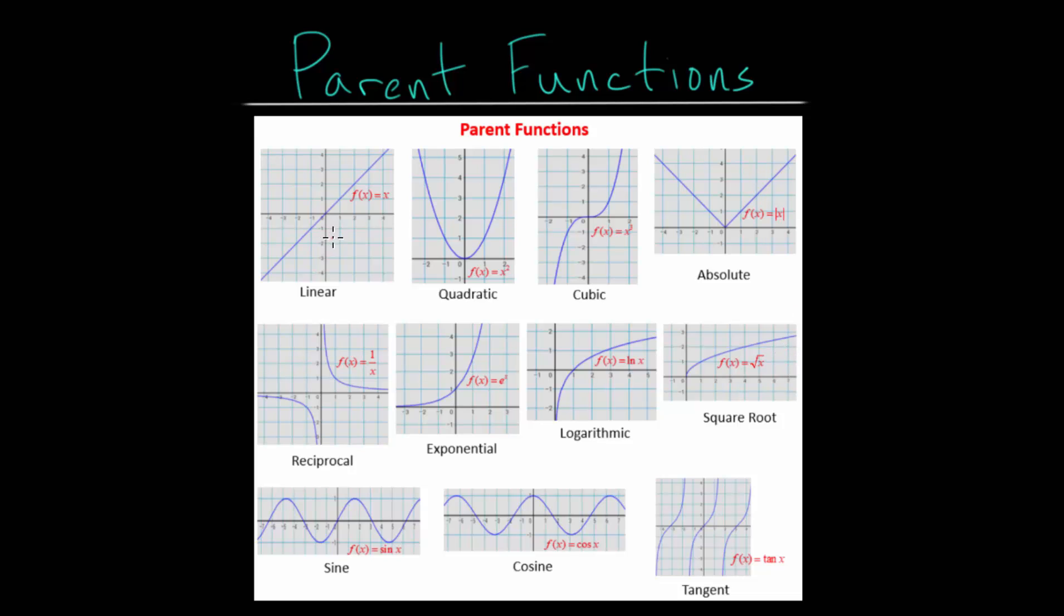We can see the basic polynomials. We have the linear, the quadratic, the cubic. We could also have the quartic which looks like the quadratic, the fifth degree polynomial which looks just like the cubic. Essentially it's just skinnier. Same with the quartic compared to the quadratic.